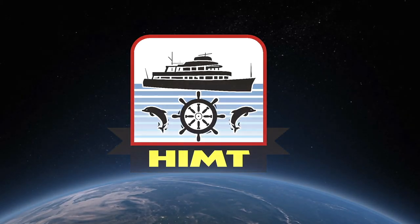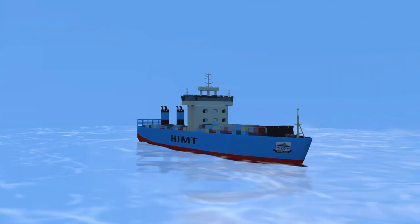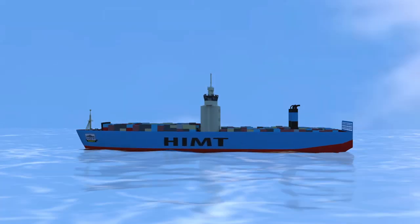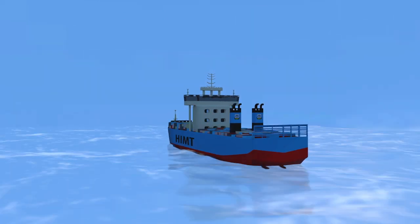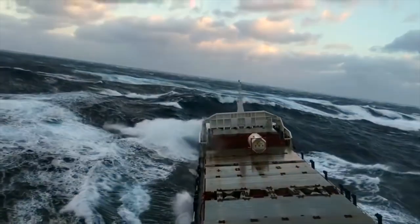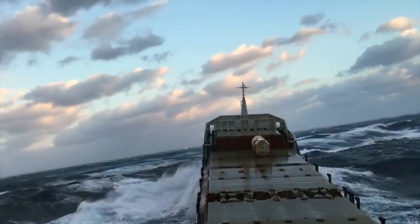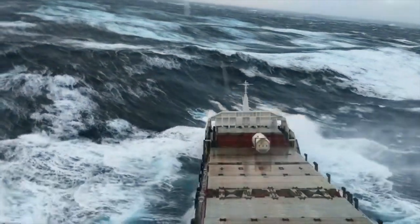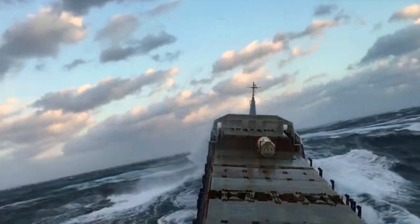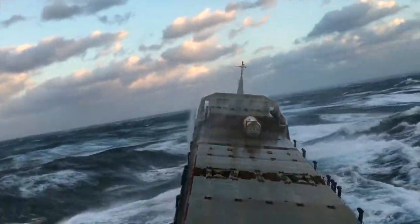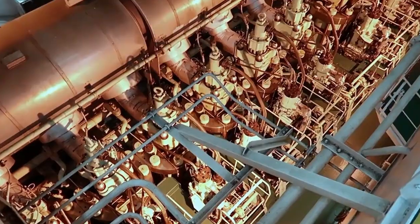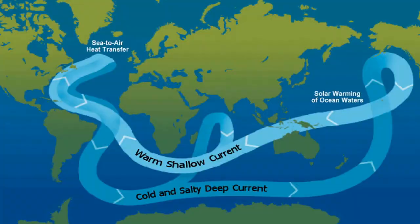Welcome to HMD's YouTube channel. In today's video we are going to show you the six different motions which a ship undergoes when it has to sail through a bumpy, turbulent, ever-changing ocean or sea. The ship's motion is impacted by the main engine plus the wind, the waves and the currents.